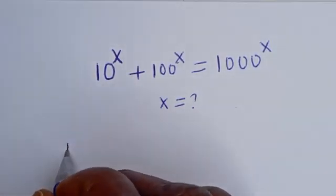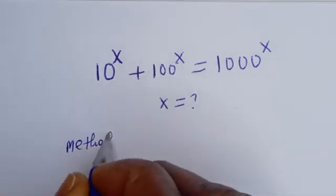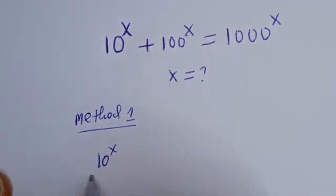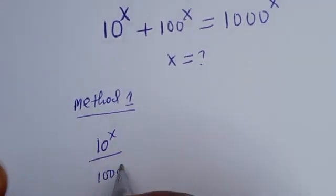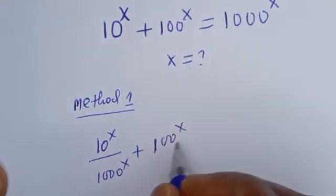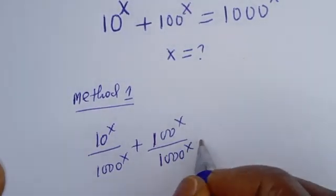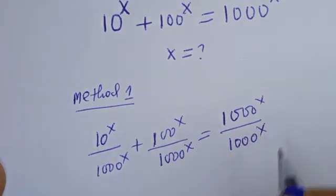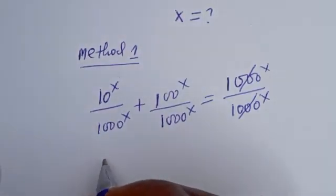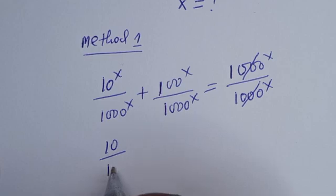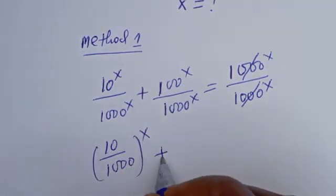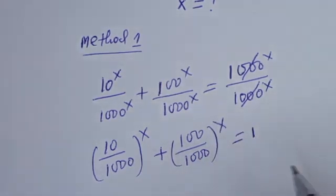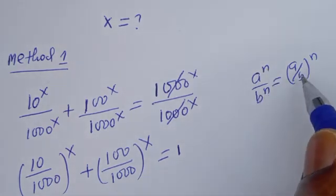Let's consider the first method. We can divide all terms by 1000 to the power of S. That is, 10 to the power of S divided by 1000 to the power of S, plus 100 to the power of S divided by 1000 to the power of S, is equal to 1000 to the power of S divided by 1000 to the power of S. This will cancel, giving us the simplified form. Note that A^N divided by B^N equals (A/B)^N.